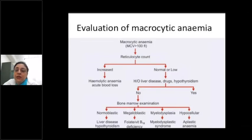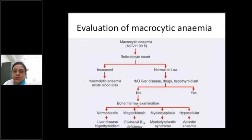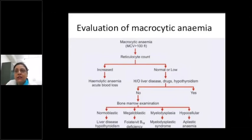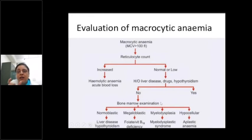The problem comes when you have a low or normal retic count. Then you need to take a clinical history for other systemic illnesses like liver disease, drugs, and hypothyroidism. If you don't get a clear-cut history, or if the MCV is more than 110 — from 100 to 110 you can entertain a variety of causes — but above 110, you are 99% dealing with megaloblastic anemia and need a bone marrow examination, because megaloblasts are seen in the bone marrow.